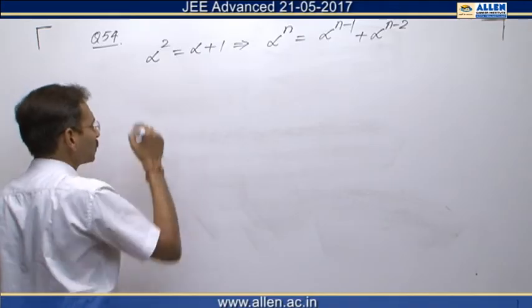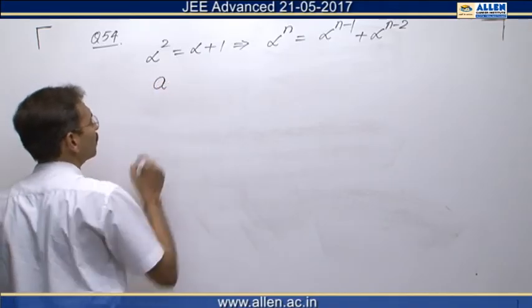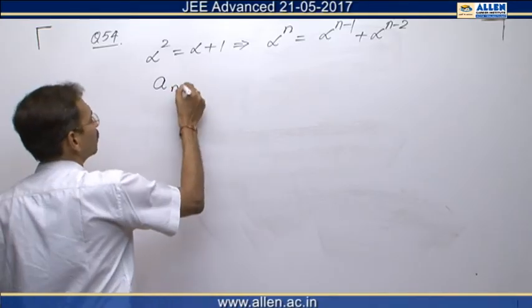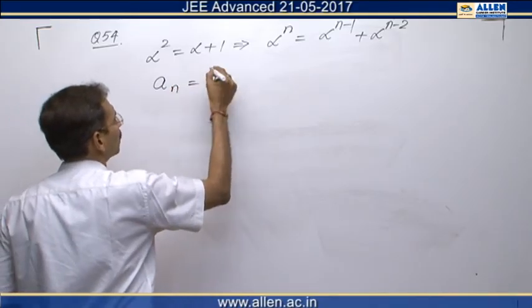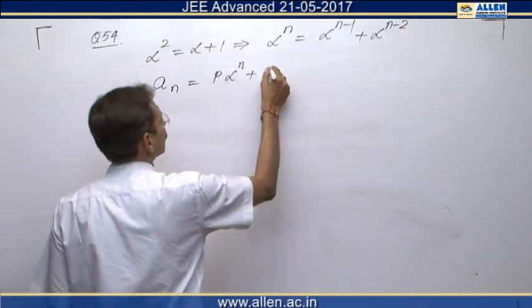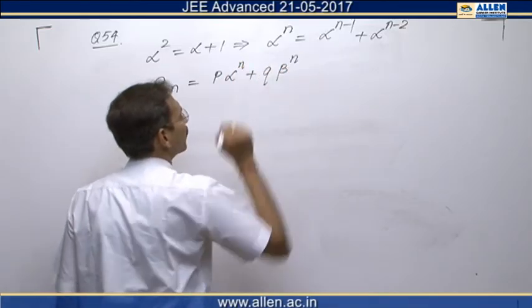So, An they have given us as P times alpha raise to the power n plus Q times beta raise to the power n.